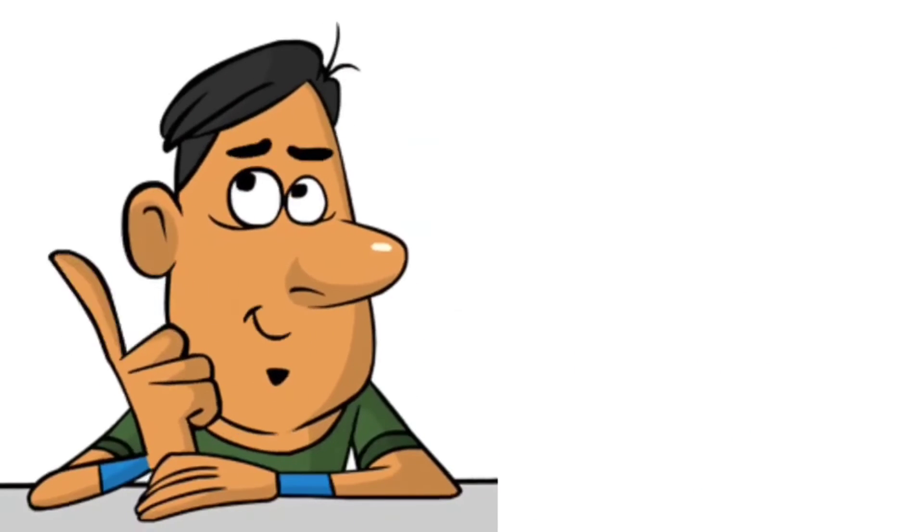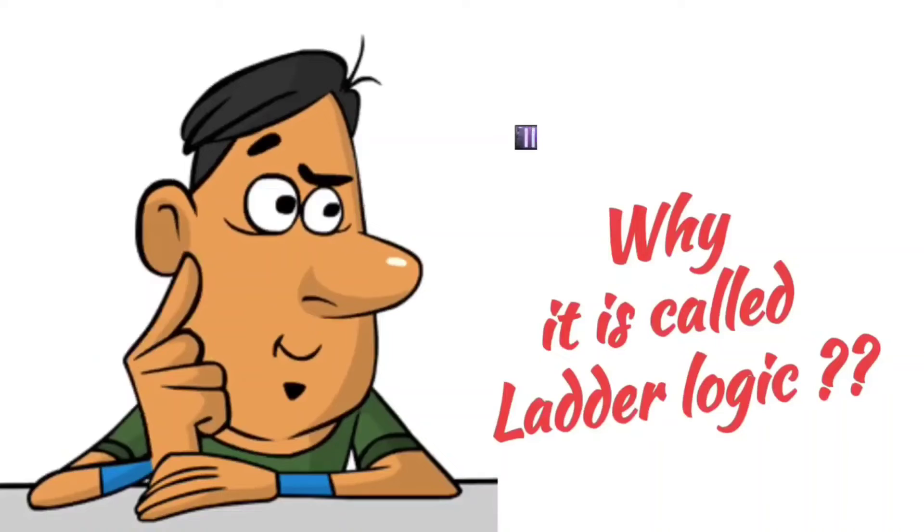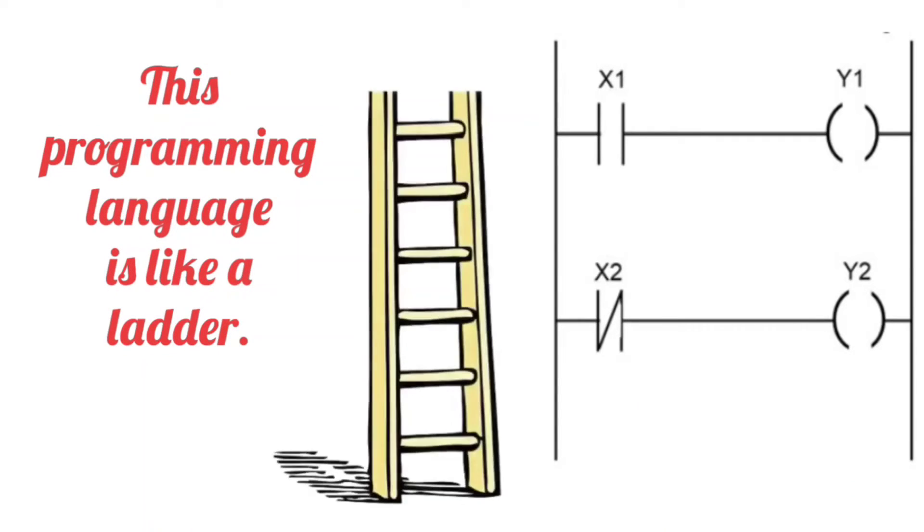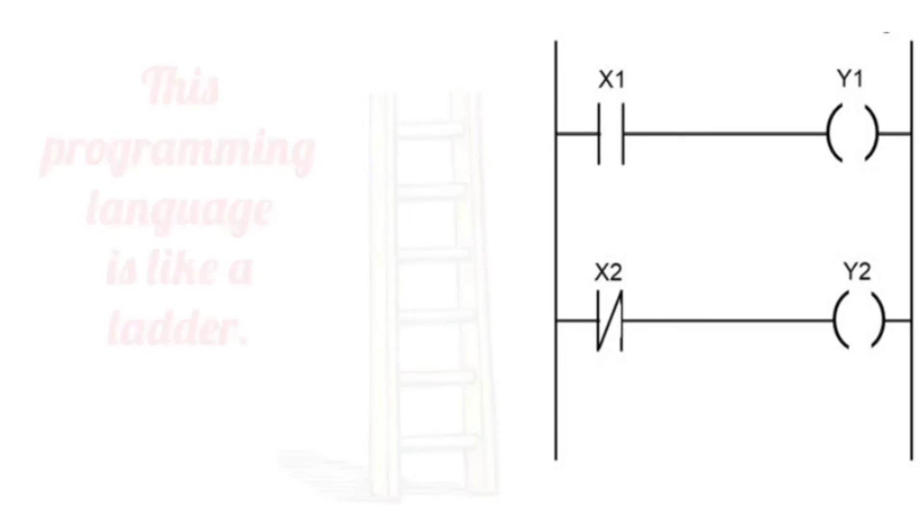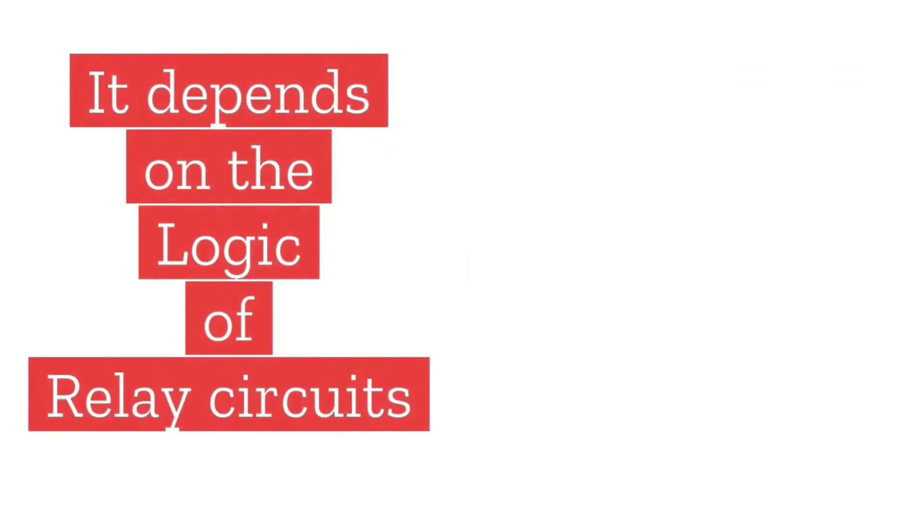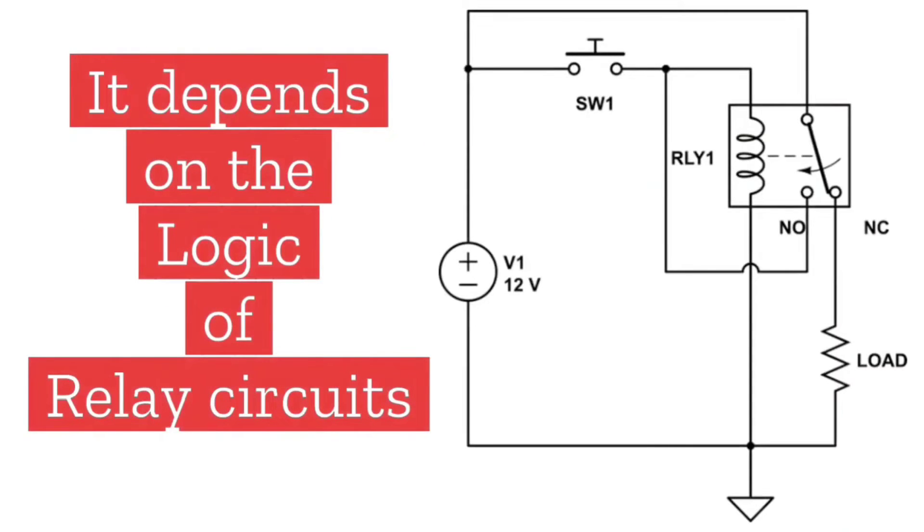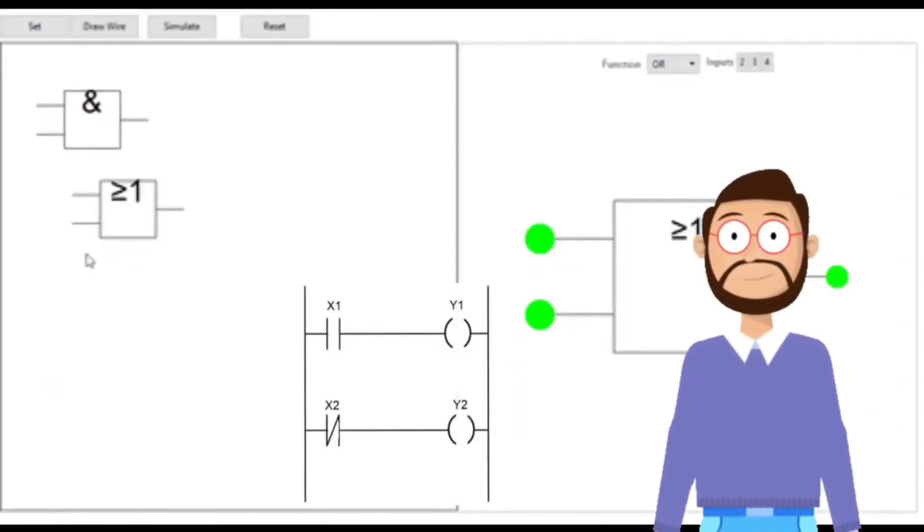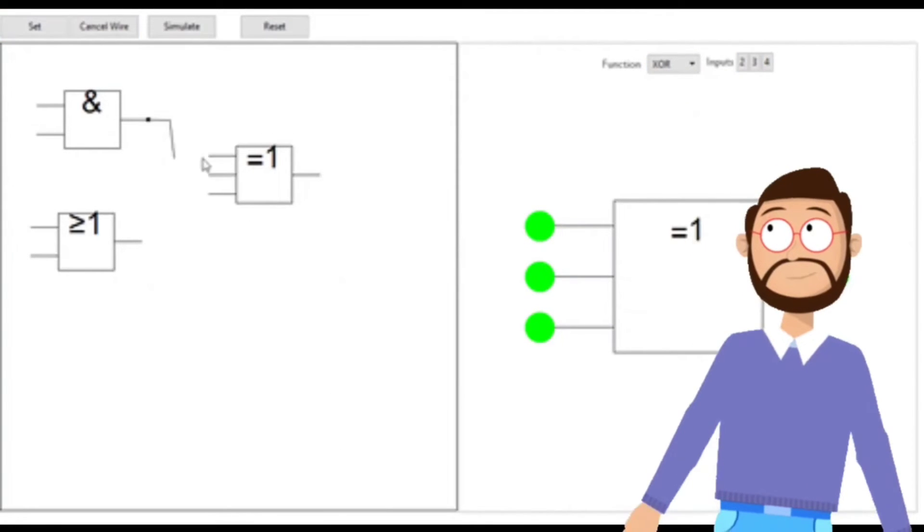Now the question arises, why is it called ladder logic? So the answer is: this programming language is like a ladder, that's why it is called ladder. And it depends on the logic of relay circuits. Or in this programming, logic functions and operations are performed, that's why it is called logic.